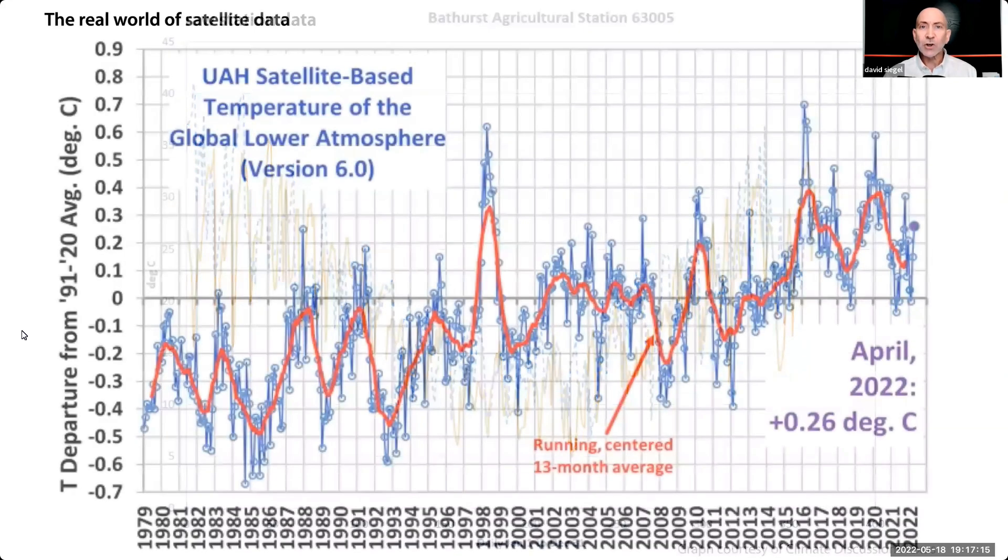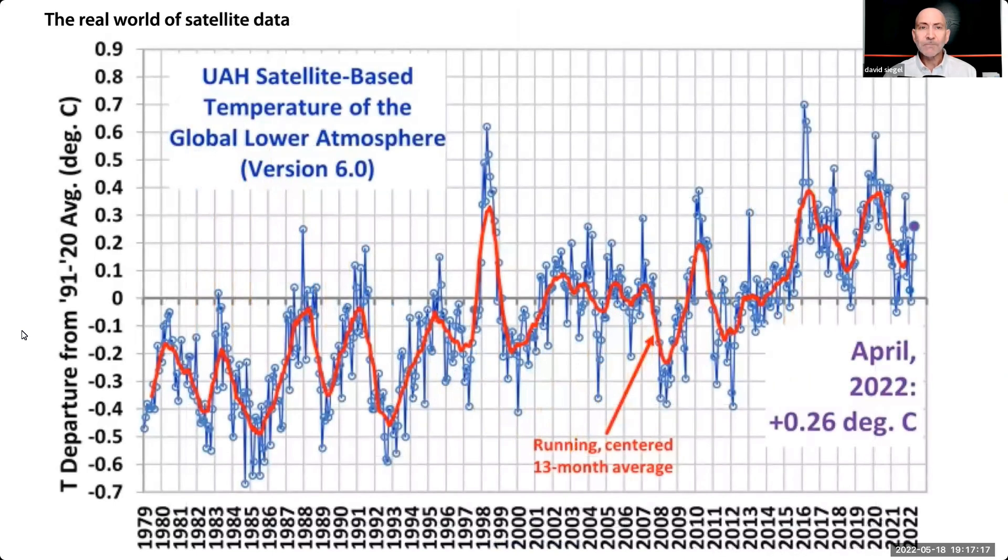There are different arguments for various interpretations of thermometer data in the past. I understand that. It's harder than you think. But since 1980, we have better data from satellites. Satellite data is the best way to measure temperature. And UAH has the best satellite data. It shows half a degree of warming in 40 years. Roughly what I've been saying.